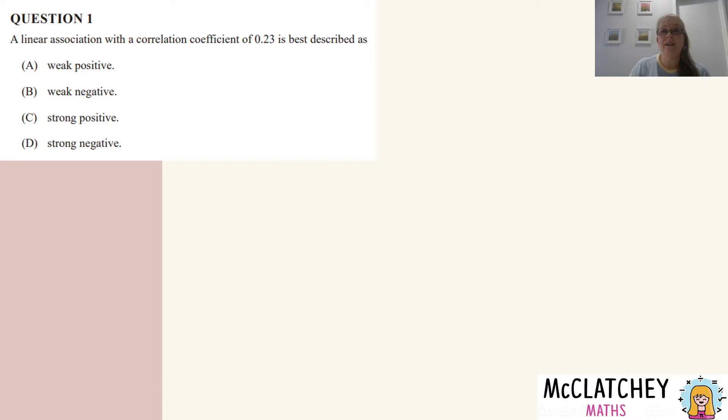Question one: a linear association with a correlation coefficient of 0.23 is best described as, and we've got some choices: weak positive, weak negative, strong positive and strong negative.